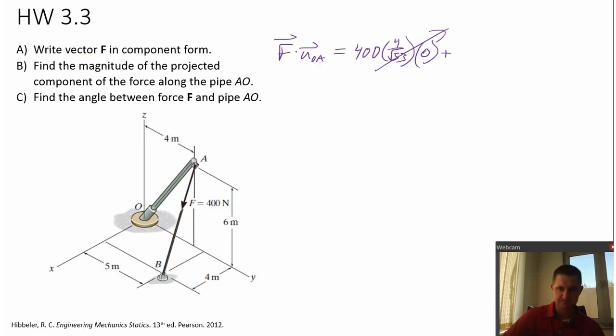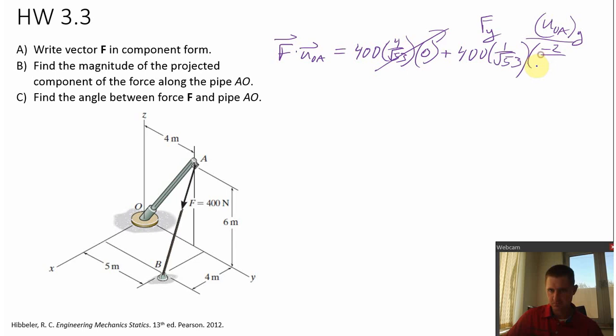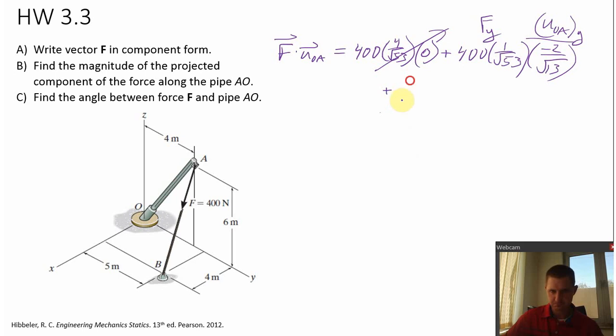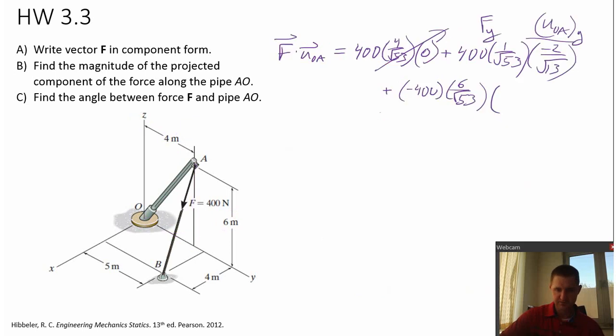And then we'll have 400, well there's a one over the radical 53. There's f y and now the y component of the position, sorry, y component of the unit vector is minus two over radical 13. And now I also need the z component. So the z component of the force vector is 400 times this negative six over radical 53. And the z component of the unit vector is negative three over 13. Now be careful with your signs here.